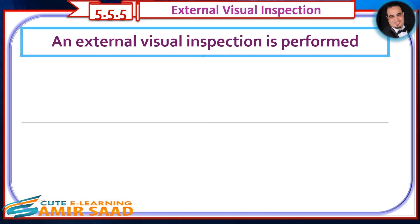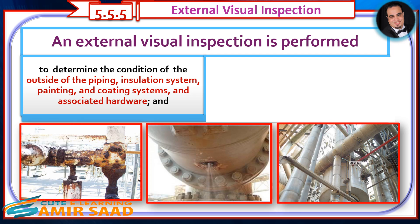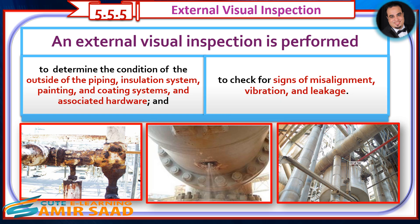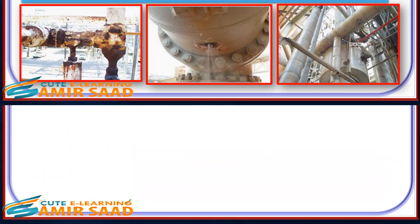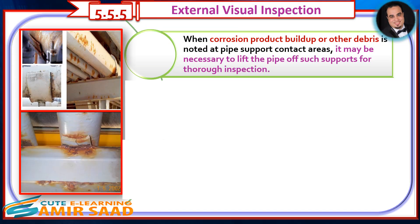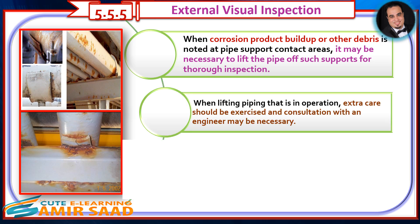An external visual inspection is performed to determine the condition of the outside of the piping, insulation system, painting and coating systems, and associated hardware, and to check for signs of misalignment, vibration, and leakage. When corrosion product buildup or other debris is noted at pipe support contact areas, it may be necessary to lift the pipe off such supports for thorough inspection. When lifting piping that is in operation, extra care should be exercised and consultation with an engineer may be necessary.